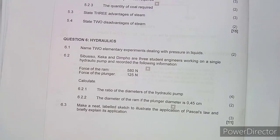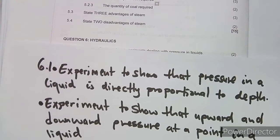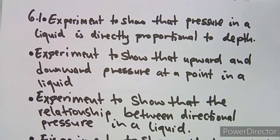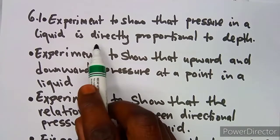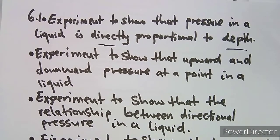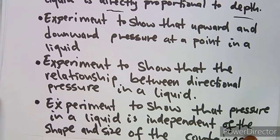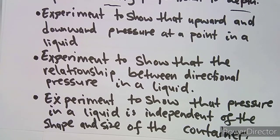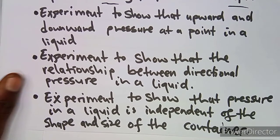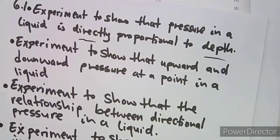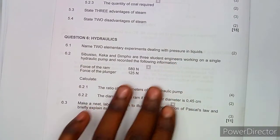The first part on 6.1 was to name two elementary experiments dealing with pressure in liquids. We have an experiment to show that pressure in a liquid is directly proportional to depth. We have an experiment to show upward and downward pressure at a point in a liquid, an experiment to show the relationship between directional pressure in a liquid, and an experiment to show that pressure in a liquid is independent of the shape and size of the container.